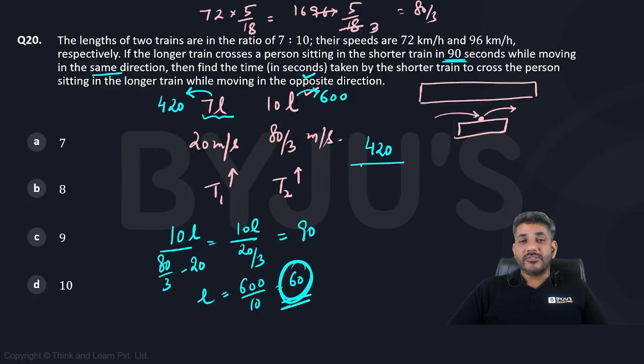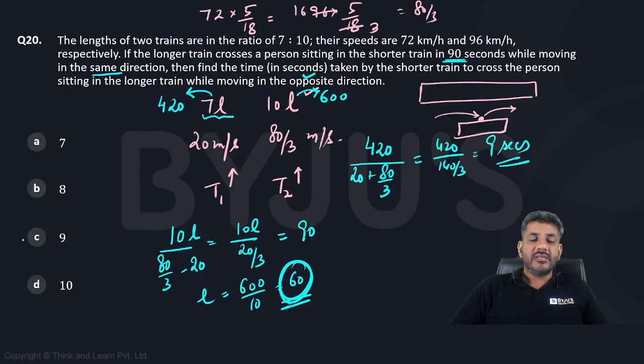Now they are running in opposite direction. So the speed would be sum of the two speeds using relative speed. So 20 plus 80 by 3. This is 140 by 3. So 420 divided by 140 by 3. This gives me 9 seconds is the time in which the shorter train would have crossed a person in the longer train. 9 seconds is the answer.